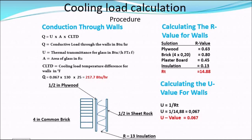Here is an example. I have calculated a total R-value of 14.88. To find the U-value, we take the reciprocal: 1 ÷ 14.88 = 0.067. That is our U-value for our walls. We can now calculate the conduction through our walls: Q = 0.067 × 130 × 25 = 217.7 BTU/hr. That is our conduction load for the walls.